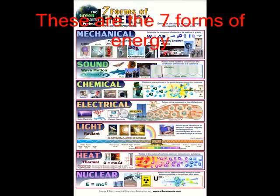These are the seven forms of energy: mechanical, sound, chemical, electrical, light, heat and nuclear energy.